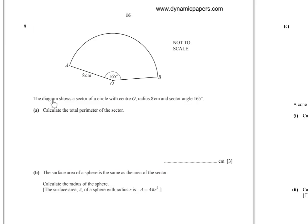Number 9: The diagram shows a sector of a circle with centre O, radius 8, and sector angle 165 degrees. Calculate the total perimeter of the sector. Perimeter equals radius plus radius plus arc length: 8 plus 8 plus (165 over 360 times 2 pi times 8) equals 39.0 to 3 significant figures.